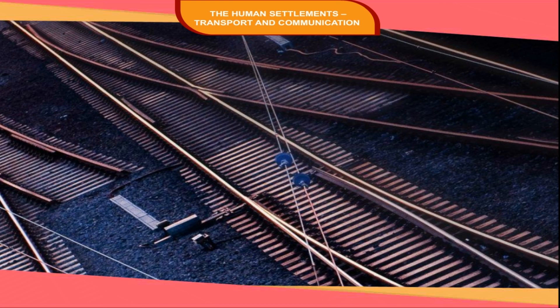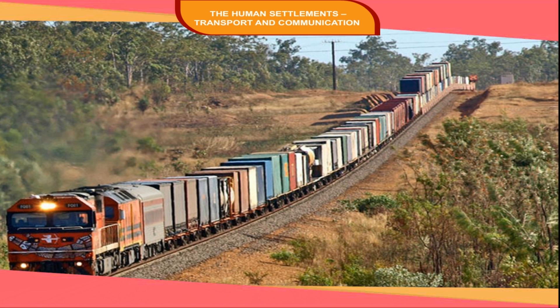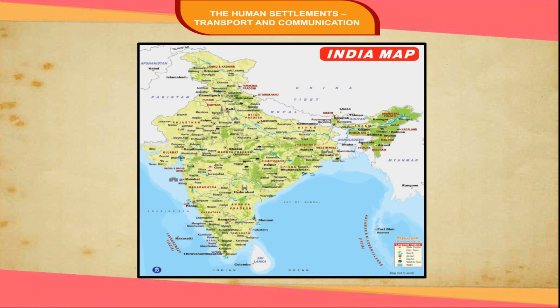The densest network of railways is found in Western Europe and East Central America, as they are the industrial parts of the world. In the African continent, railway lines are not well developed. India has the fourth largest network of railways in the world, with a good network in the Satluj-Ganga Plain and a moderately developed network over peninsular India.